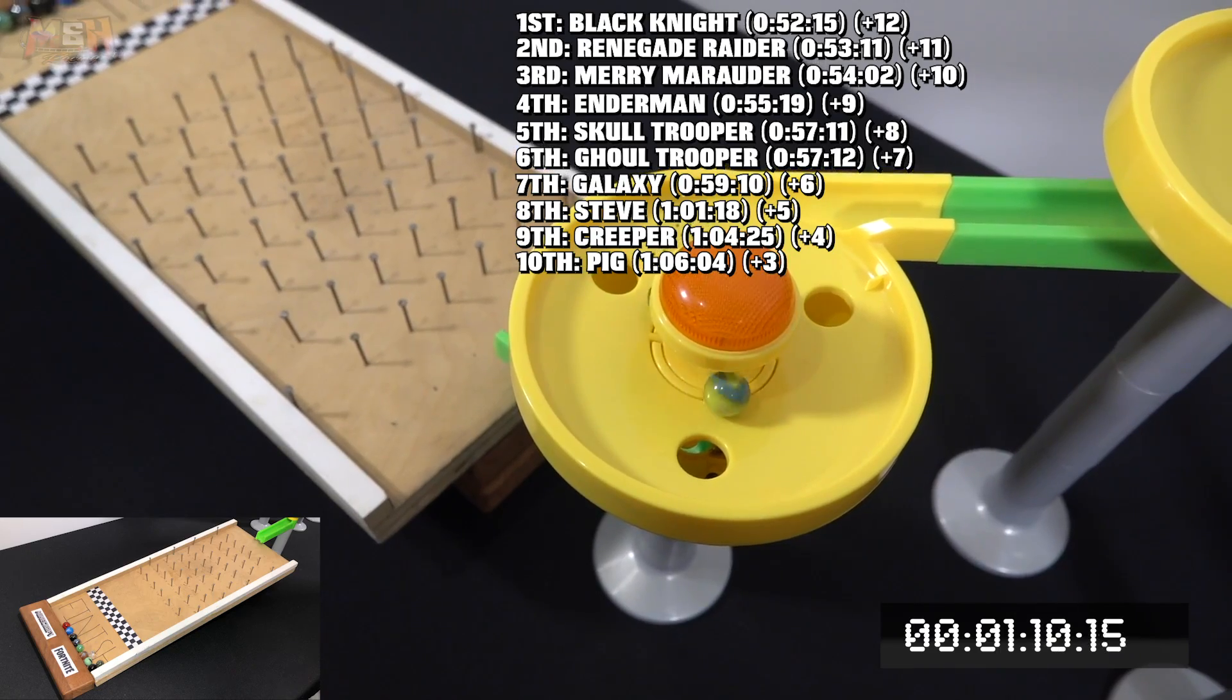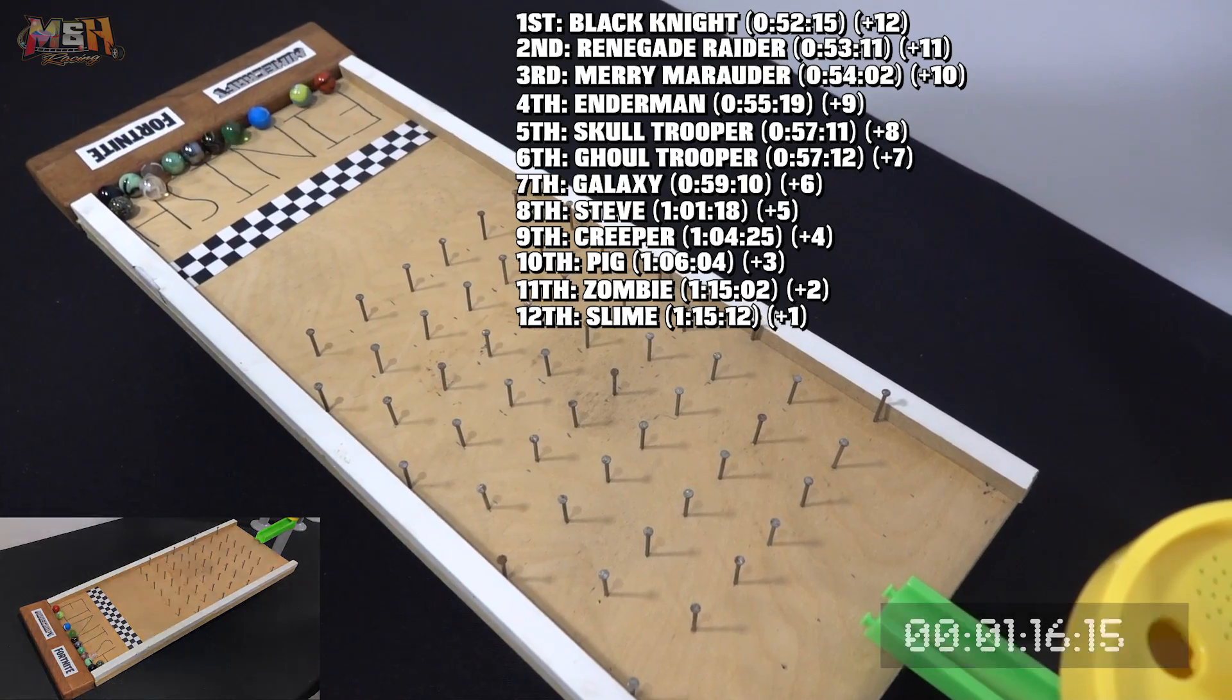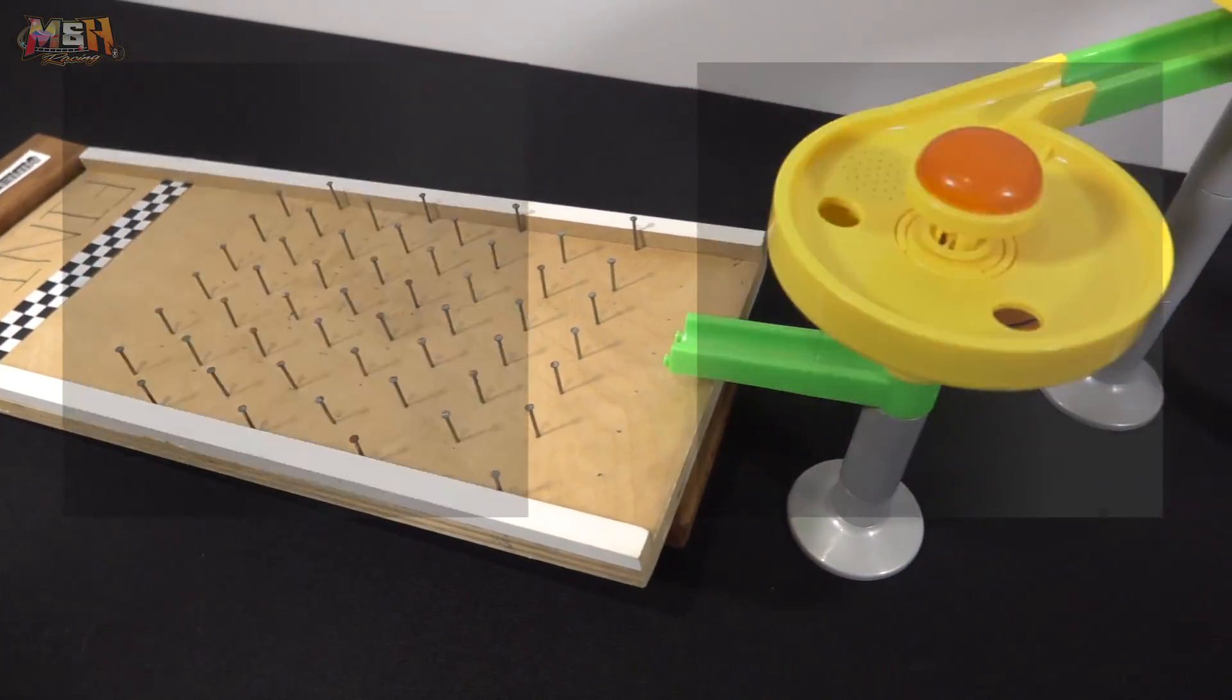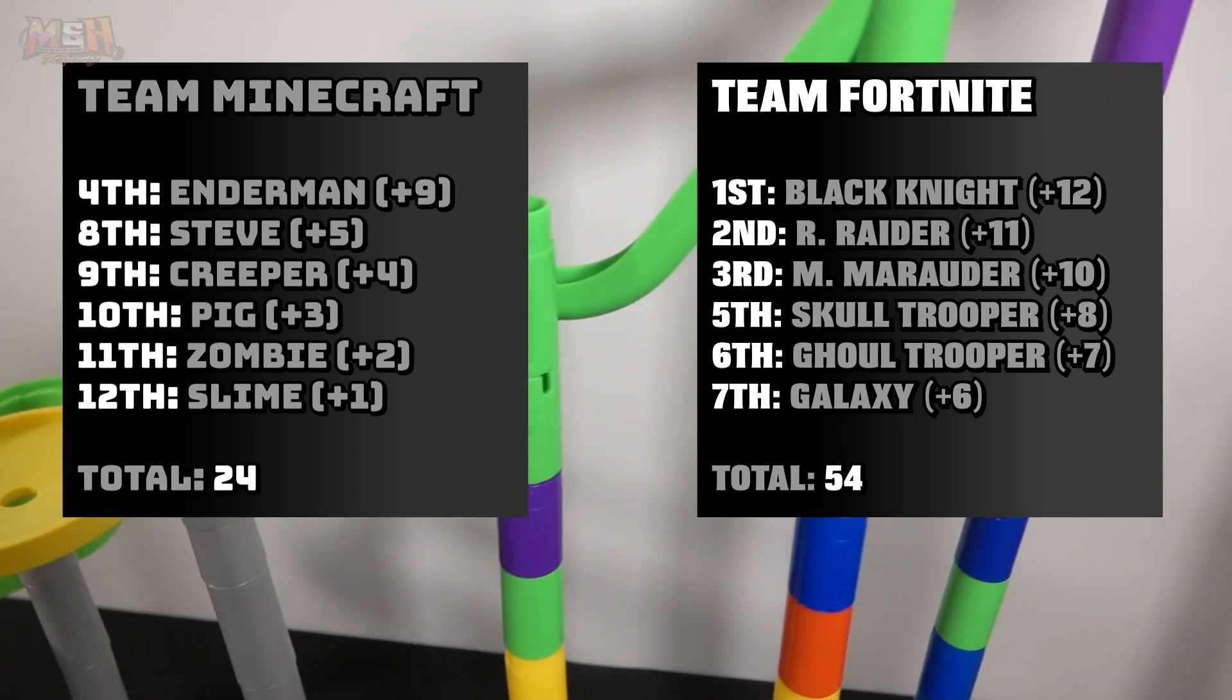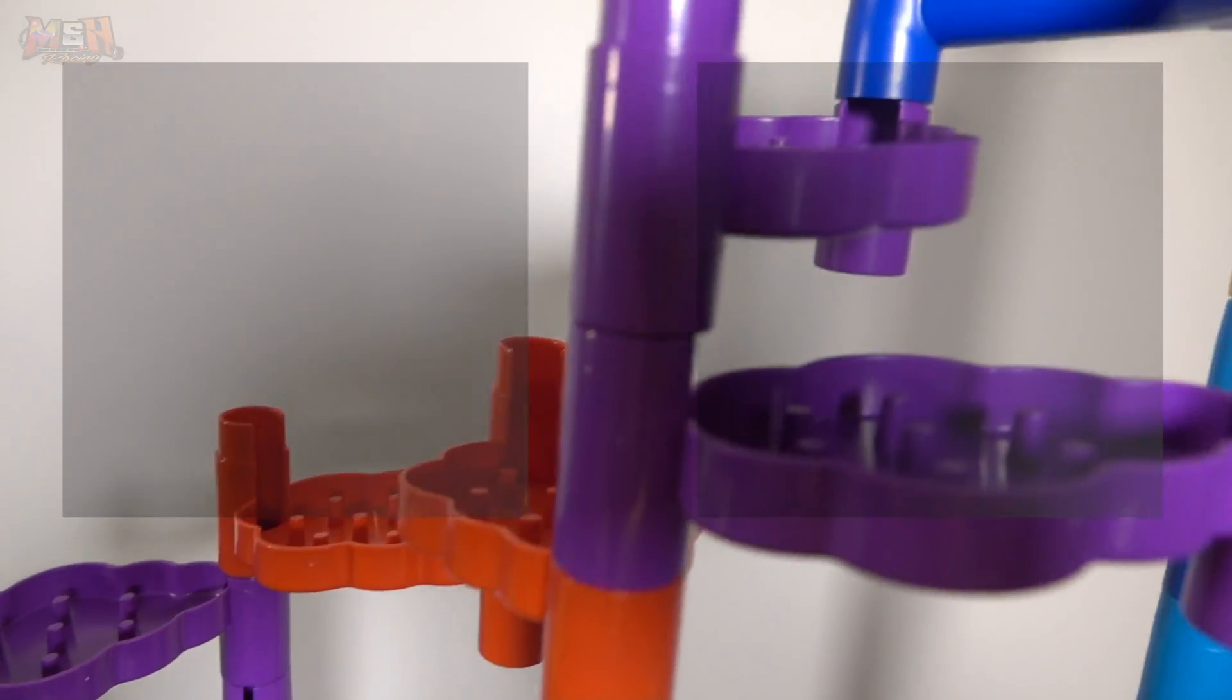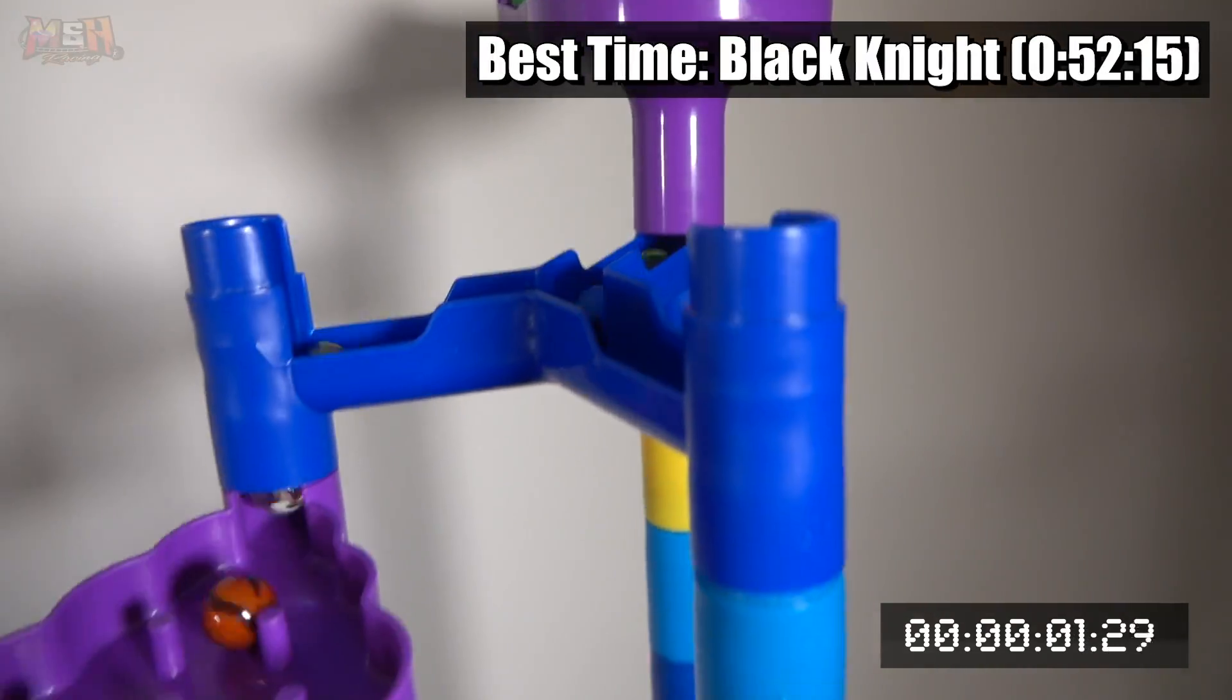It looks like last but not least we have two Minecraft marbles still stuck in that pinball dish, and they both make it out. Minecraft's gonna be taking the bottom two spots. Things certainly aren't going in the favor for team Minecraft so far. Fortnite currently racked up a total of 54 points, 30 points ahead of Minecraft. As mentioned before, since Minecraft currently trails behind, they'll be starting first in the starting grid.